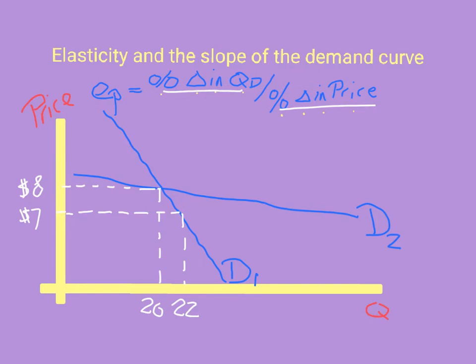Now comparing that to the change in quantity demanded for demand curve 2: at the same price of $7, the quantity demanded for D2 is probably somewhere around 45 or so — that's a huge increase in quantity demanded. So for D2, the percentage change in quantity demanded is much bigger than the percentage change in price, meaning D2 has a very high price elasticity of demand.